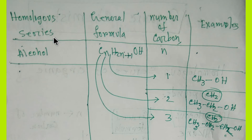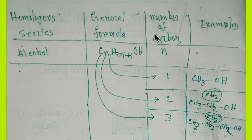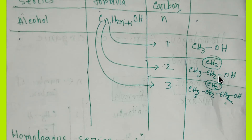Now let me take another organic compound — this is alcohol. The general formula of alcohol is CₙH₂ₙ₊₁OH, where n is the number of carbons. If you take n=1, you get CH₃OH — this is methanol. If you take n=2, you get ethanol. The difference between these two compounds is CH₂.